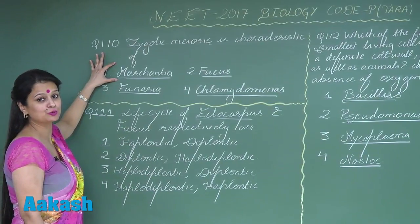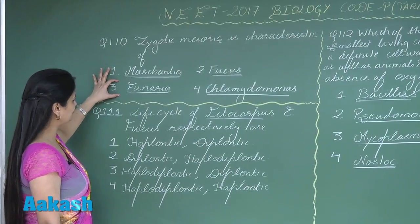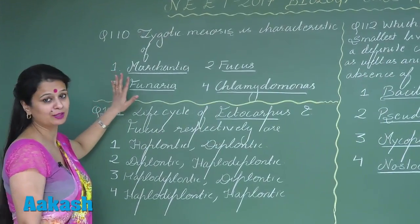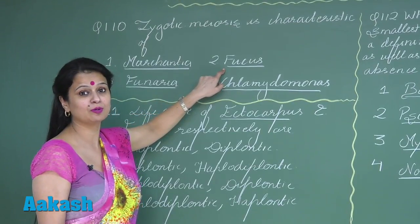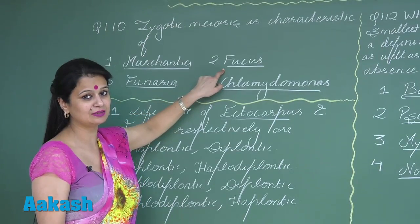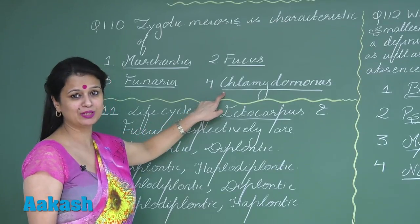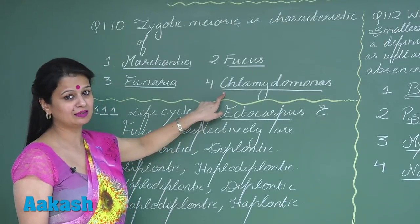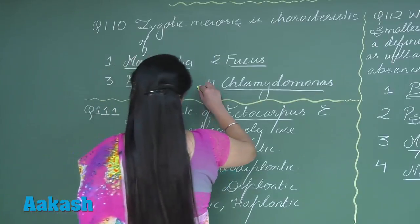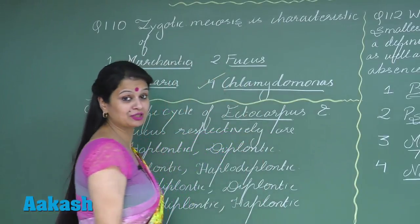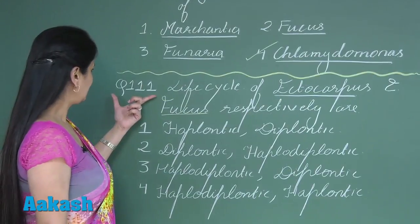Marchantia shows sporic meiosis. Same in the case of Funeria — both are bryophytes. Fucus has a diplontic life cycle with gametic meiosis. In Chlamydomonas, a haplontic life cycle with zygotic meiosis is present. So the right option for this question is option number four.